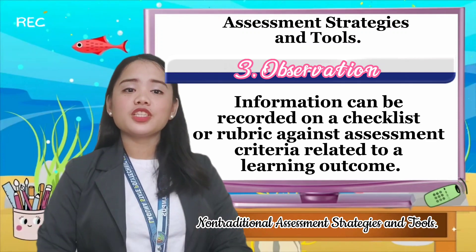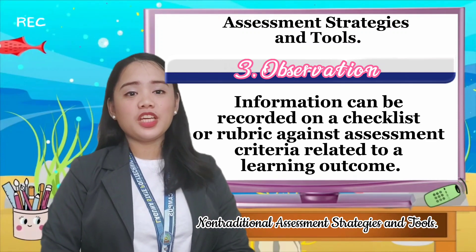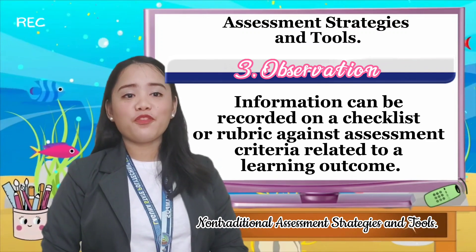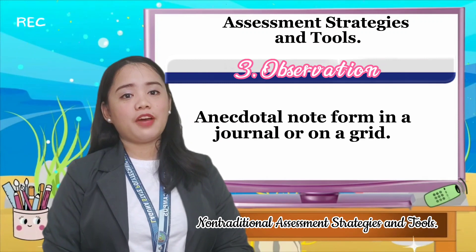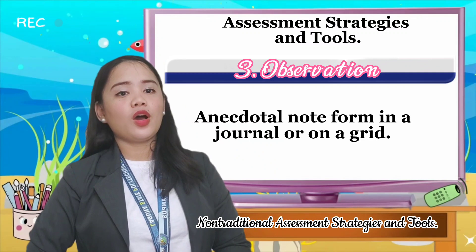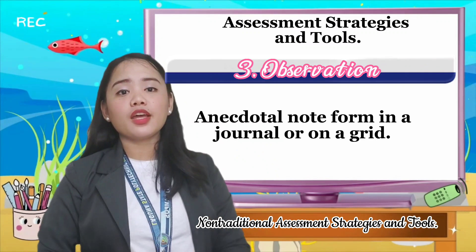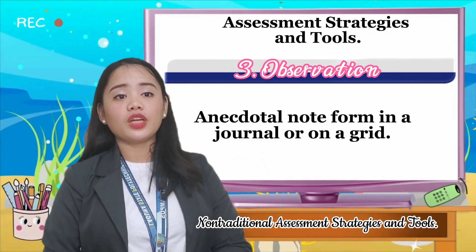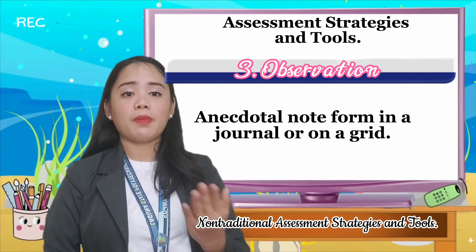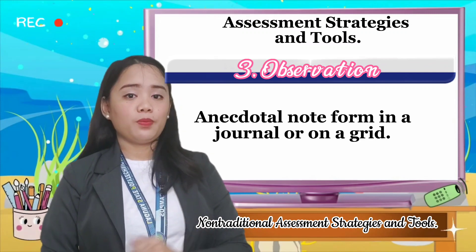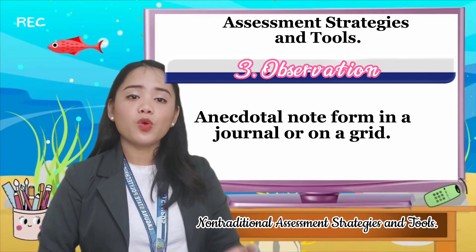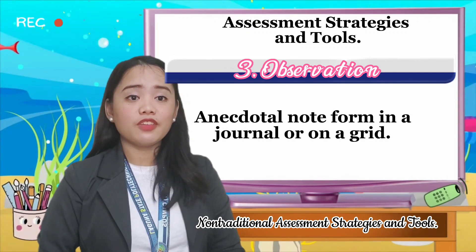Observation is information that can be recorded or written in an anecdotal note. This is a factual written record of the child. From the word 'factual,' only true information is written here. For example, if a child is frequently absent, that attendance record is what you write. Factual means you don't concern yourself with whether the child is unhappy about a low grade or anything else. In observation, everything the students do and their progress is recorded factually.